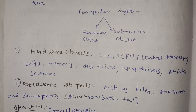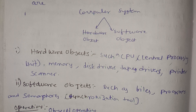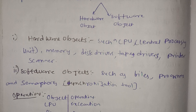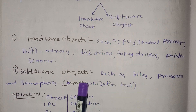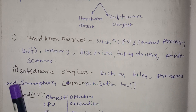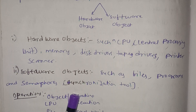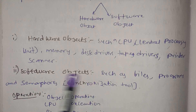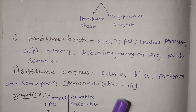We can touch the CPU, memory, printers and similar devices, but software objects we cannot touch. Software objects include files, programs, and semaphores. Semaphores are a synchronization tool using signal and wait operations.